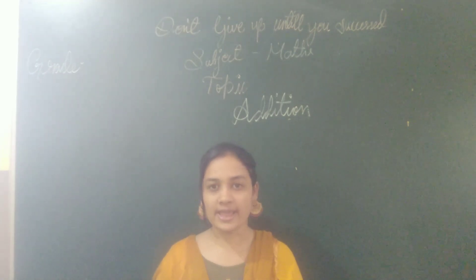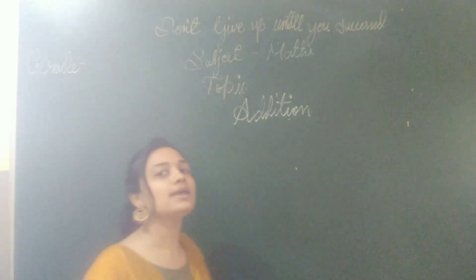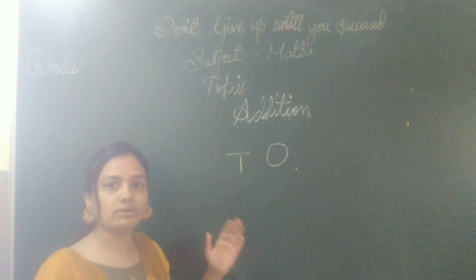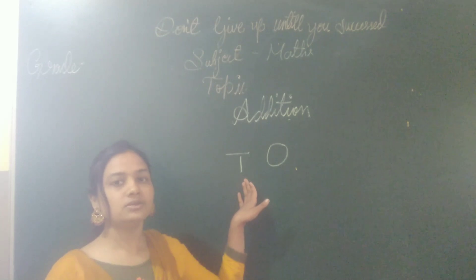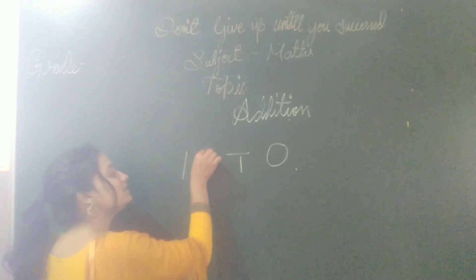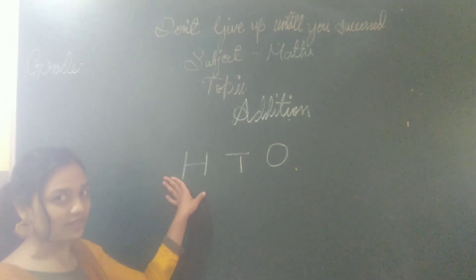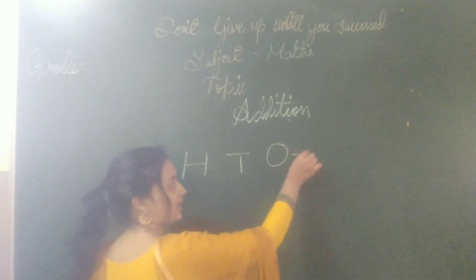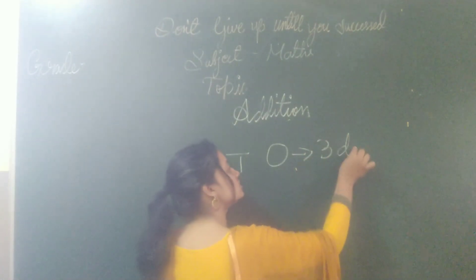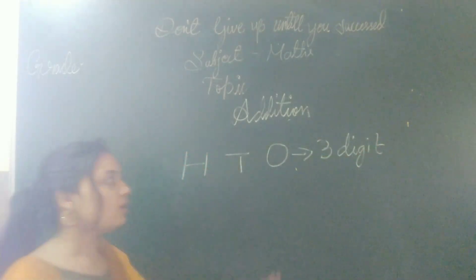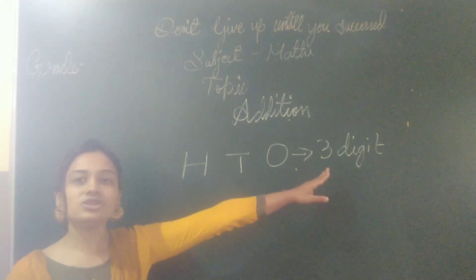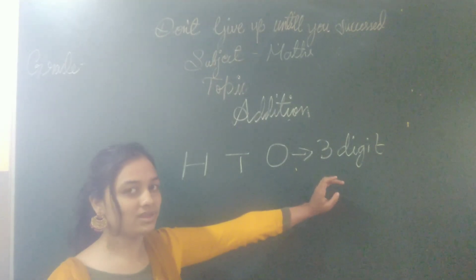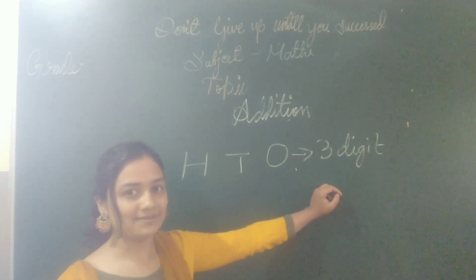Today we will be continuing the same but with little changes. In the last class, we learnt addition of one digit and two digits. Today we will be learning addition of three digits, where you have hundreds place also. Numbers which have all three places — ones, tens, hundreds — are called three-digit numbers. Today we will be adding three-digit numbers and also doing carry over sums. So let's go for the activity and check out.